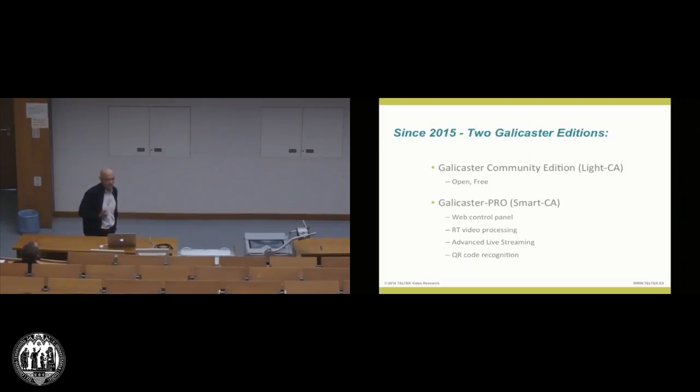And since last year, since 2015, we also released this new generation of capture agents. So now we have two editions of Galicaster. The Galicaster community is still being there. It's still open, it's still available. And also available is this commercial version or evolution of Galicaster that provides many additional features, as we will see very soon, like the web control panel, a lot of real-time video processing, streaming, and also real-time QR code recognition.